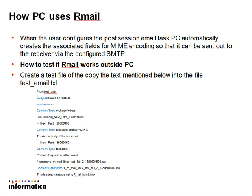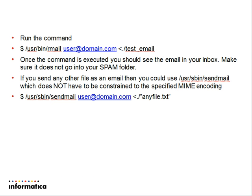Now, to test if R-Mail works outside of PowerCenter, make sure that you copy the associated fields as mentioned below in a text file and run the command. Run /usr/bin/rmail with any email address you want it to receive, and input the test email which contains the MIME encoding. Once the command is executed, you should be able to see the email in your inbox. Sometimes it does tend to go to spam folders if that's how your system security is set, so please make sure to check your spam folder.